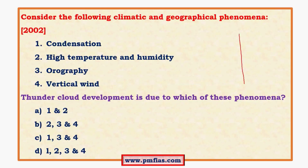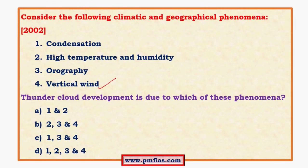Another concept is that there is subsidence also along with upliftment in vertical winds. Subsidence is associated with very stable conditions and high pressure at the ground level, resulting in no cloud formation. If you take it too strictly, vertical winds could be a wrong option. But the question asks which is a possibility rather than being specific, so we can consider option 4 as a possible option. The clear answer is D.